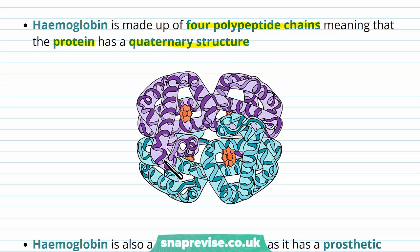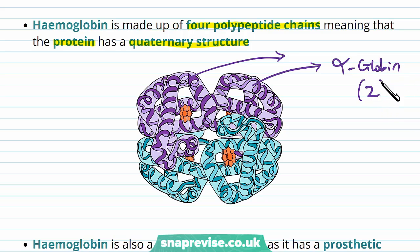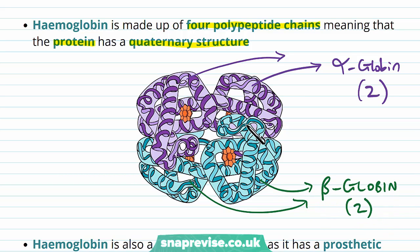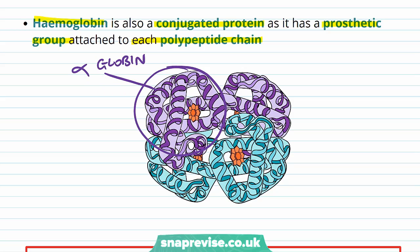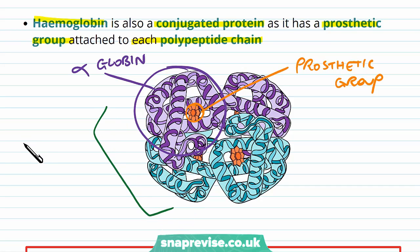We have two purple polypeptides called alpha-globin and two blue polypeptides called beta-globin, giving four polypeptides interacting with each other — this is why it has a quaternary structure. Haemoglobin is also described as a conjugated protein, which by definition means it has a prosthetic group attached to each polypeptide chain. Here's one of the alpha-globin chains, and for each chain there is a prosthetic group associated with that polypeptide. This interaction between a polypeptide and a prosthetic group means the whole of haemoglobin is conjugated.